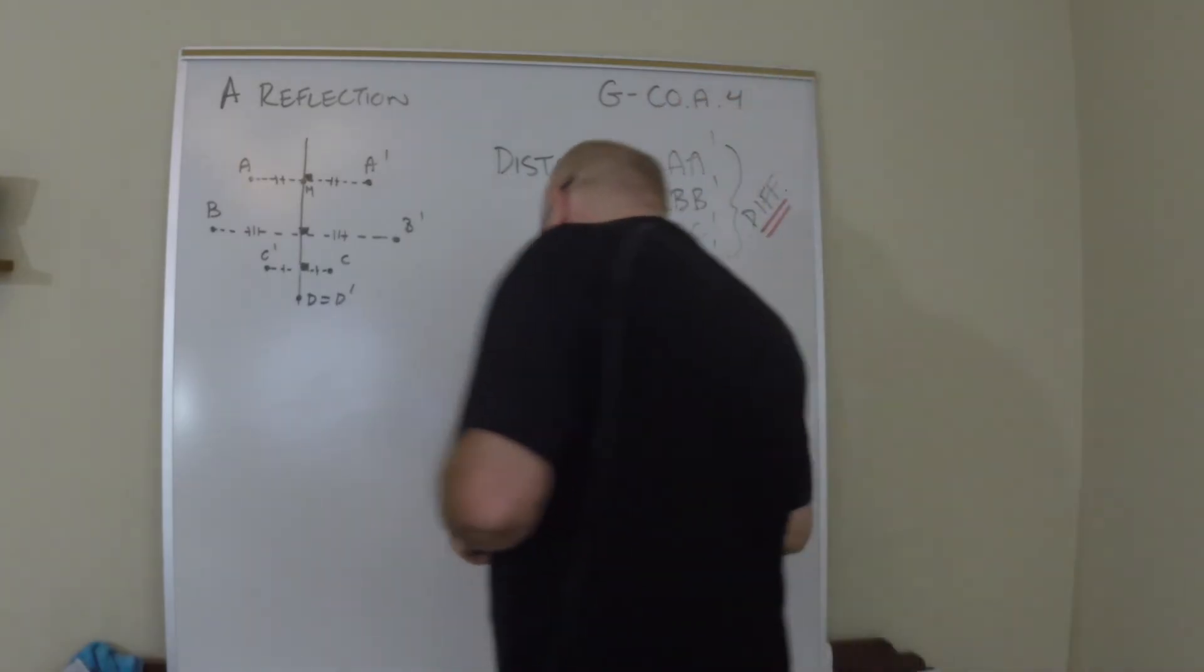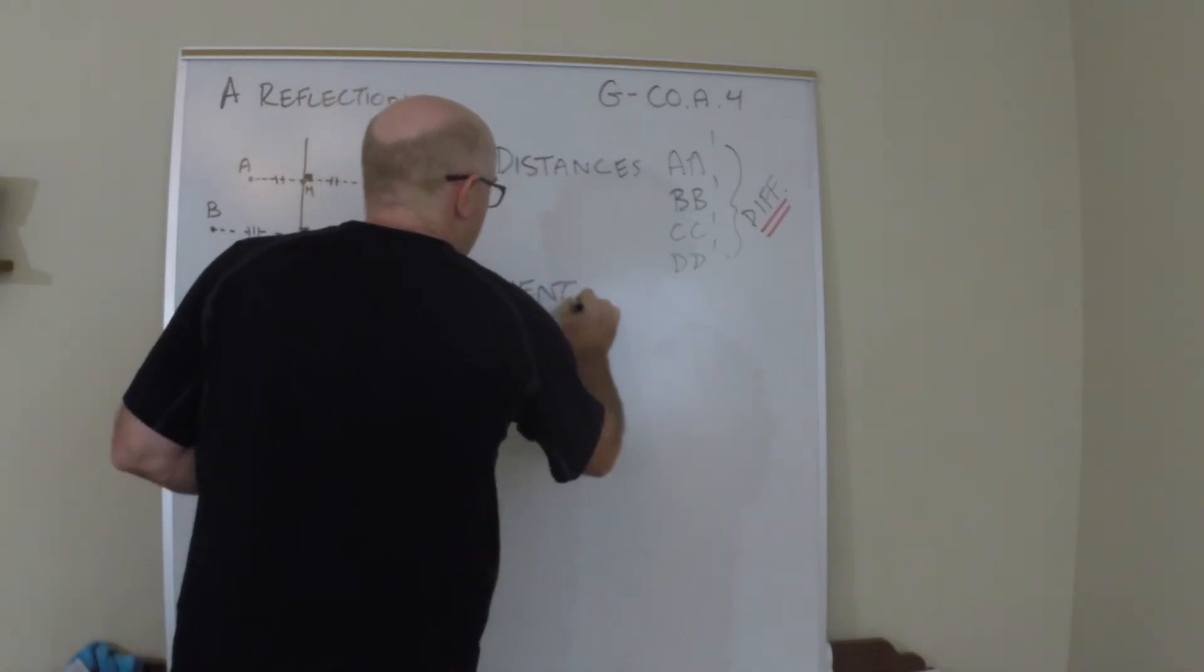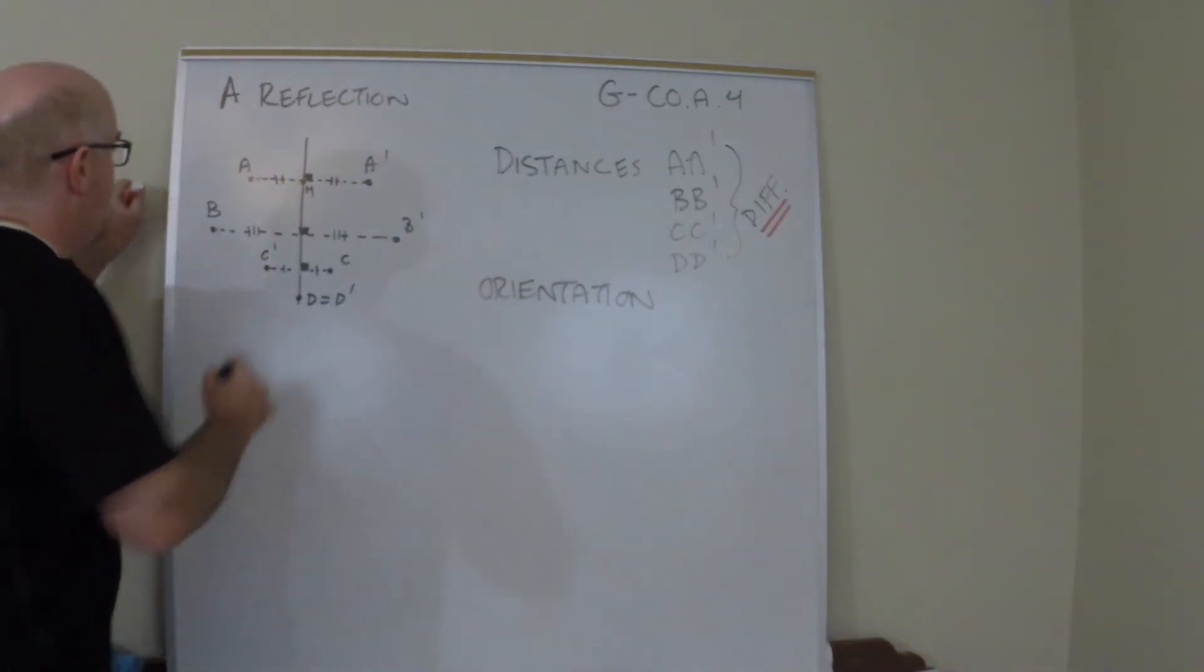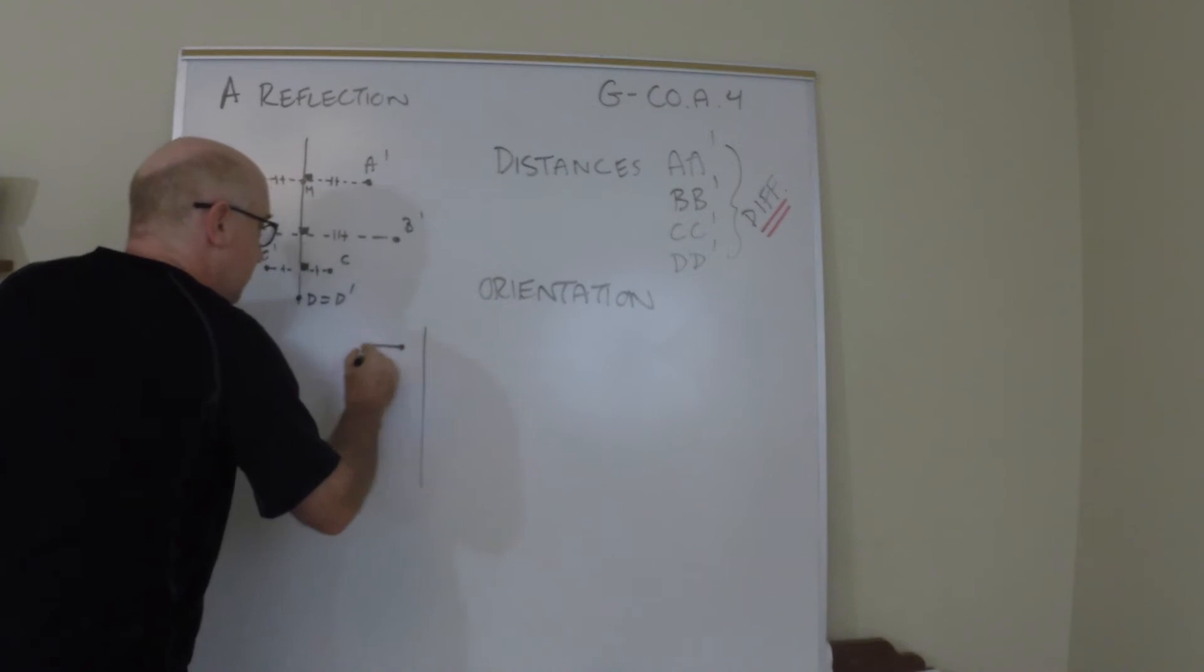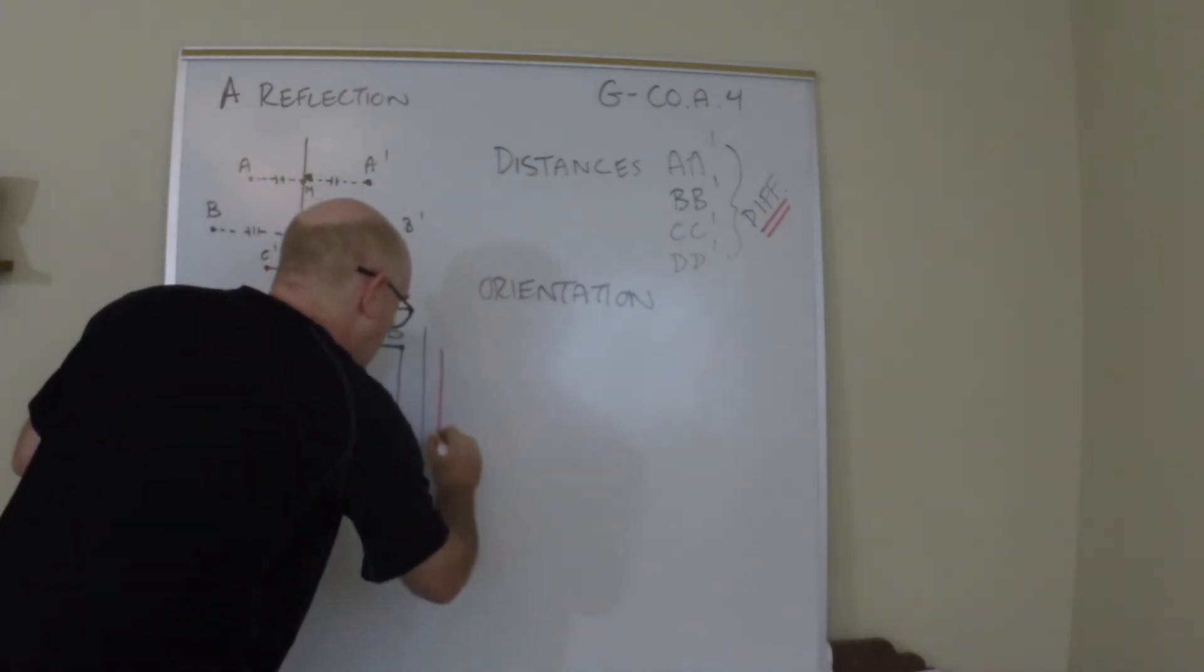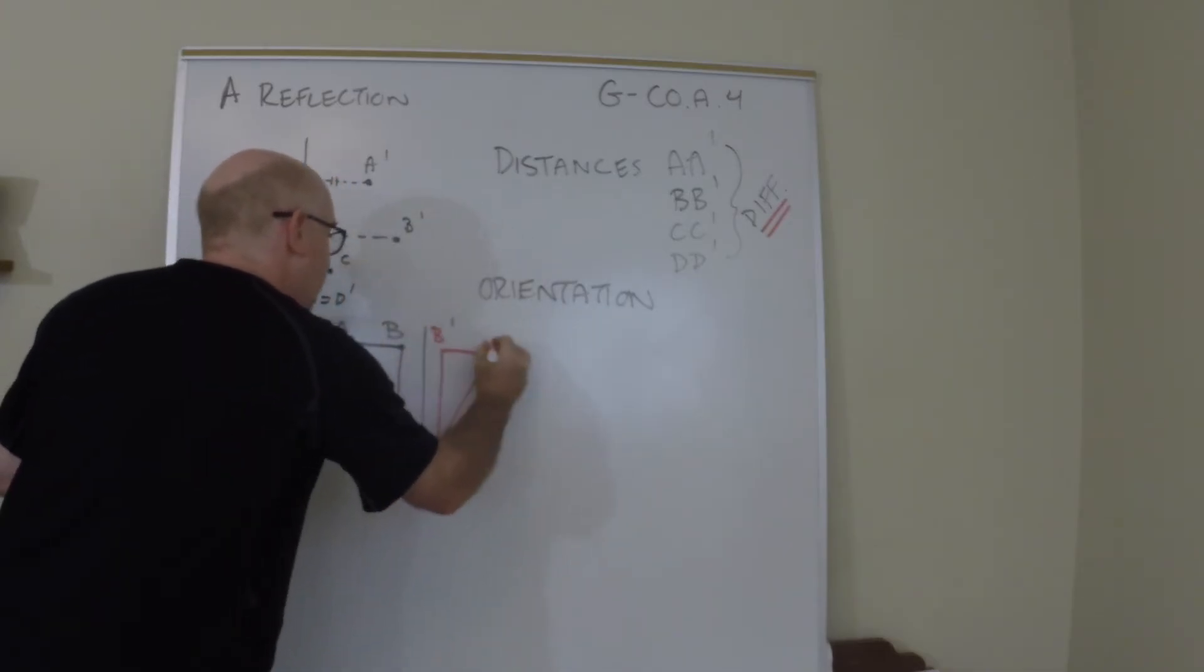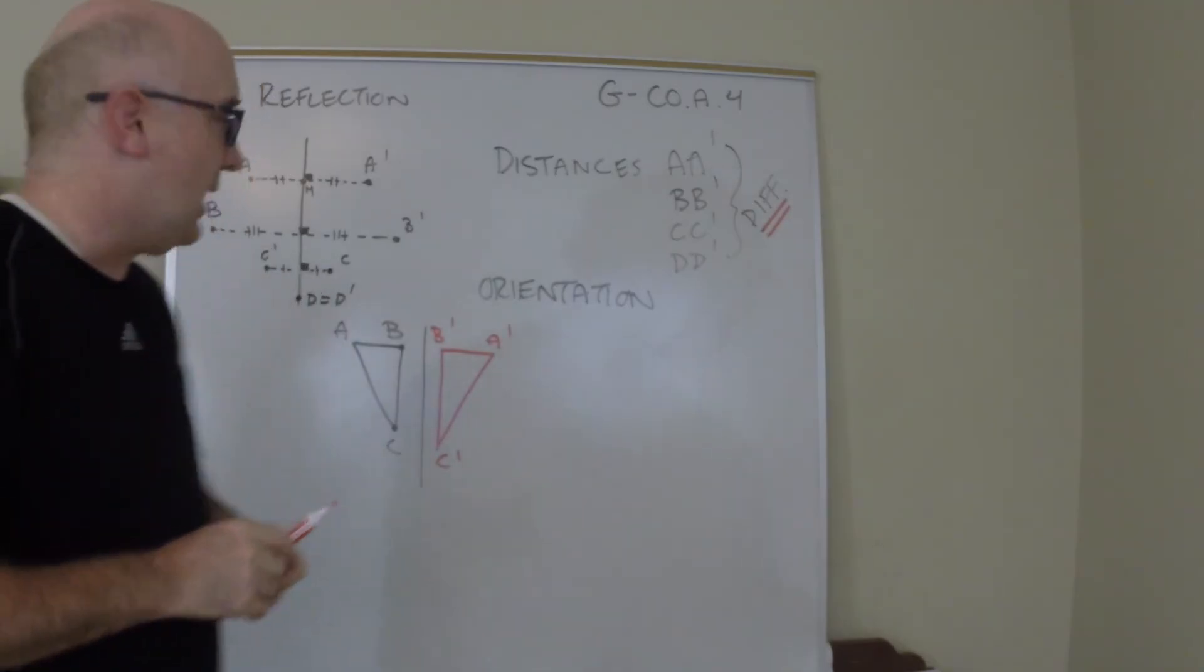The second characteristic that is important is orientation. Now orientation is the ordering of points. So let's do a new one - let's start with a triangle here, A B C, and let's reflect that triangle across. C prime here, B prime here, A prime here.